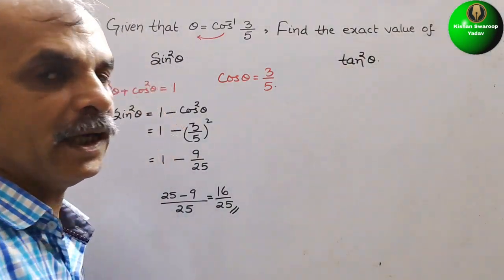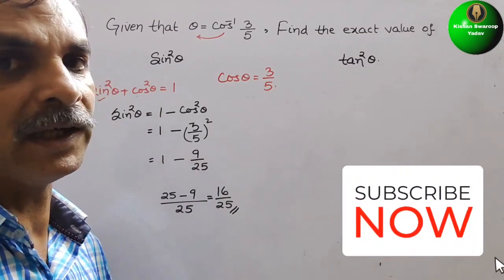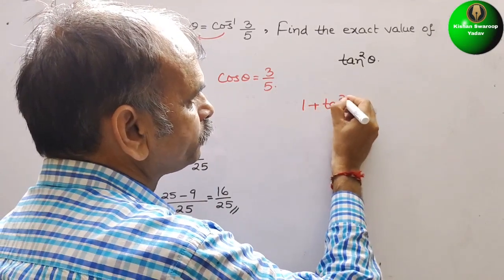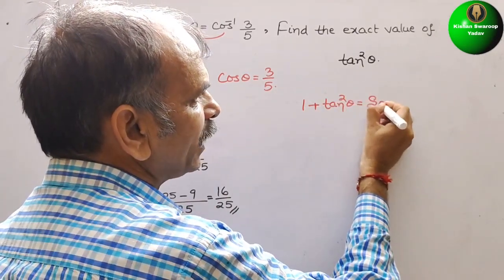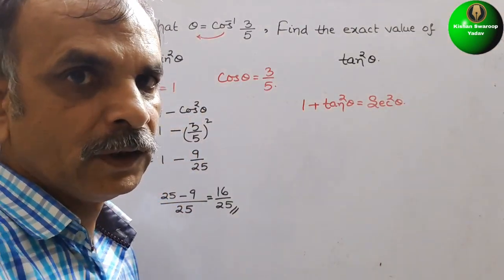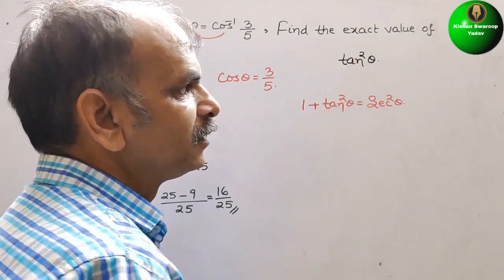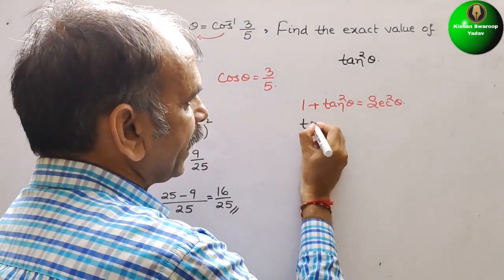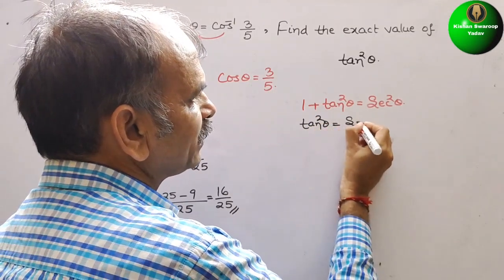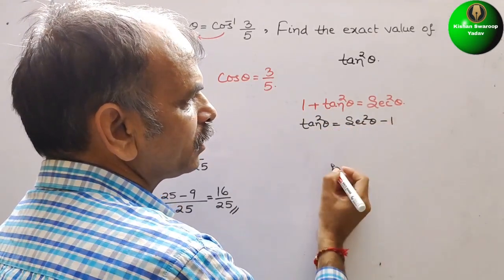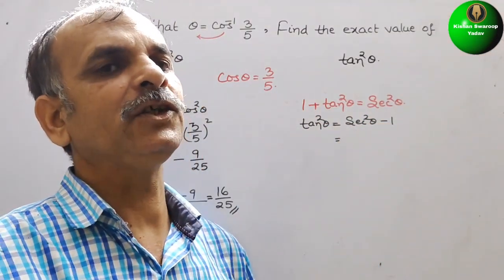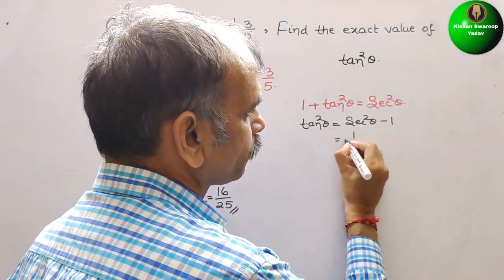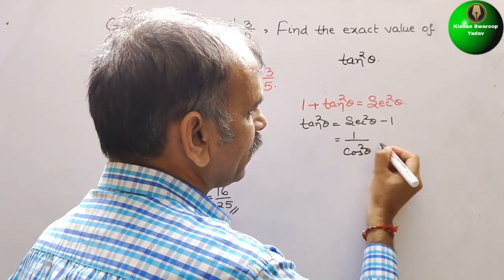Next comes tan square theta. The identity for tan square is: 1 plus tan square theta is equal to secant square theta. They have asked for tan square, so that is equal to secant square theta minus 1. Tan square theta is equal to secant square theta minus 1. We know secant is equal to 1 by cos, so we can write 1 by cos square theta minus 1.